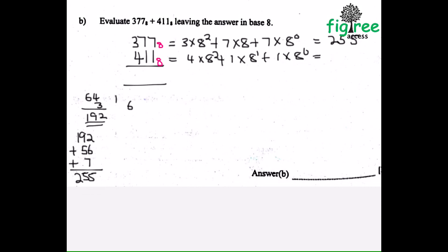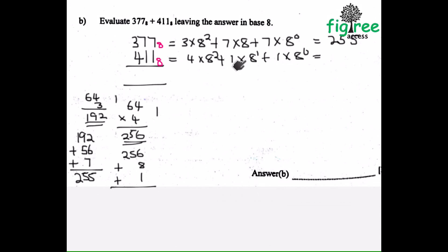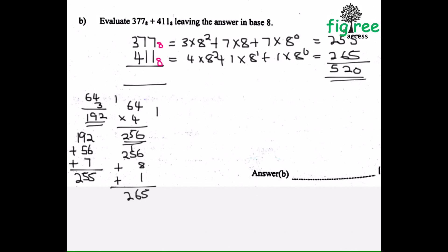Then I'll do the same to the second number: 64 times 4 gives me 256. Then adding the remaining numbers: 1 times 8 is 8, plus 1 times 1 is 1. So 256 plus 9 gives me 265. Then I'll add 255 plus 265, which gives me 520.